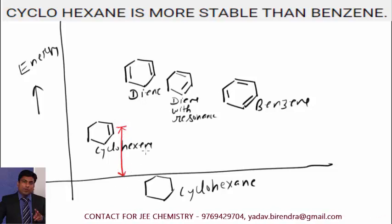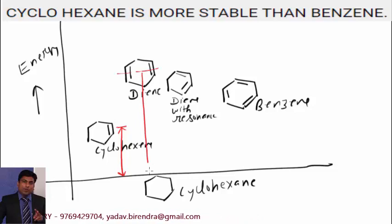Now when cyclohexadiene is hydrogenated, then if there is no resonance, this much of energy will be evolved. This is heat of hydrogenation. If there is resonance, this much of energy will be evolved. Why there is change in energy? Why there is change in heat of hydrogenation? Because here there is resonance.